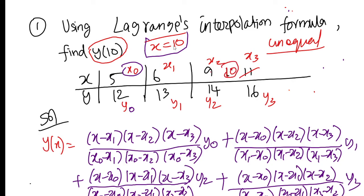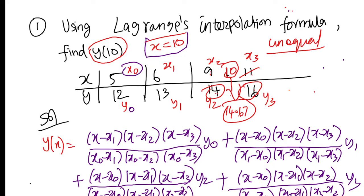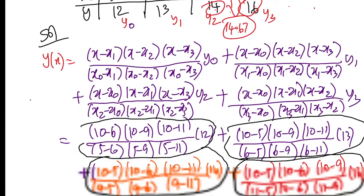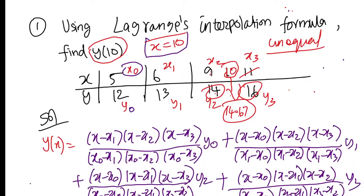Once you fully type everything in, you get the answer. Check your answer carefully — if you made a mistake, redo it. Lagrange interpolation is very important for marks; it can be a 5-mark or 10-mark question. Newton's forward and backward are also important problems.